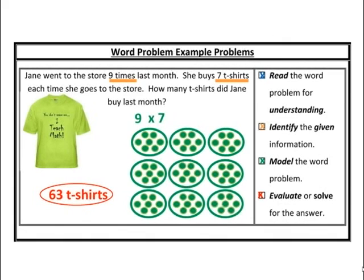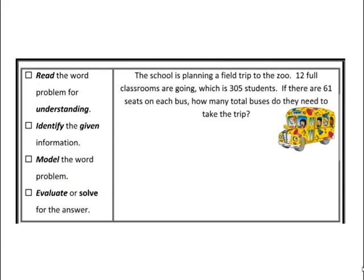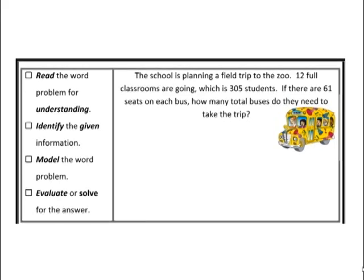Next problem. Read for understanding: The school is planning a field trip to the zoo. Twelve full classrooms are going, which is 305 students altogether. If there are 61 seats on each bus, how many total buses do they need? Retell the story: I have a total number of students and I need to separate them into groups of 61 — each group of 61 is a bus. Taking a big group and separating into equal smaller groups sounds like division, and my answer will be smaller.